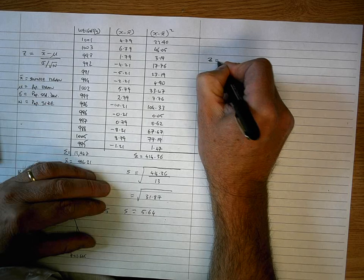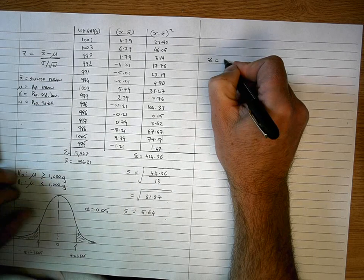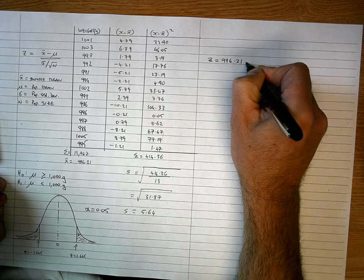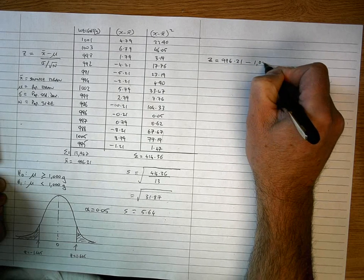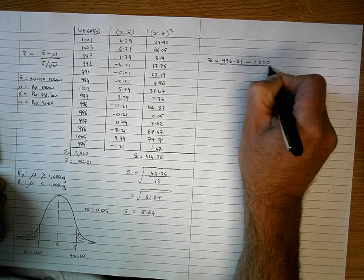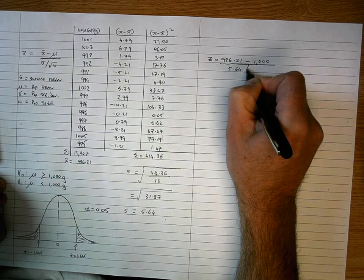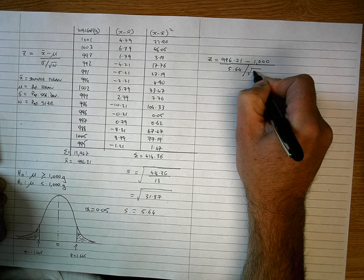So Z is going to be equal to X-bar, which is 996.21, minus the population mean, which is 1,000. I want to divide that by the standard deviation we've just calculated, that's 5.64, divided by the square root of 14.